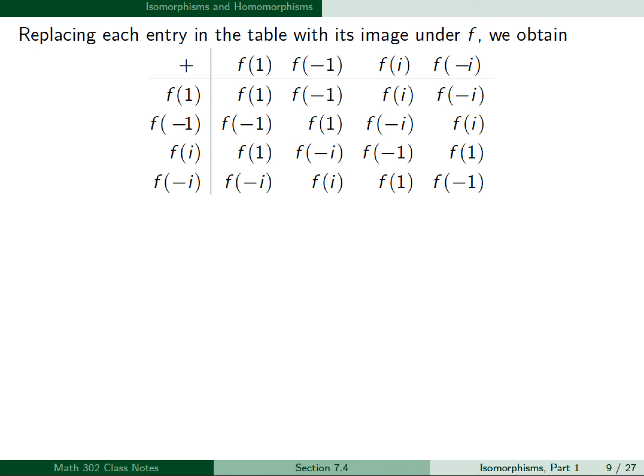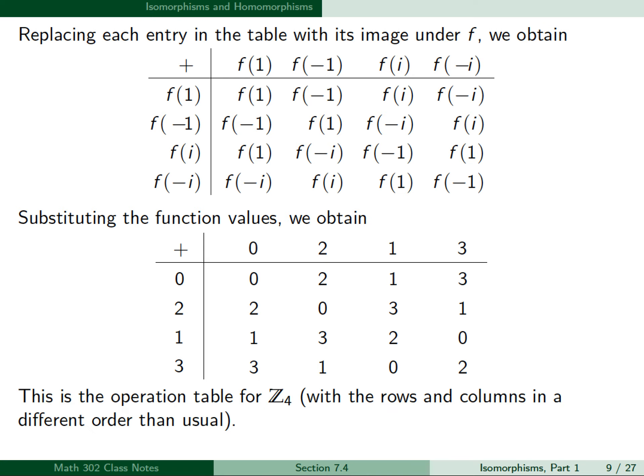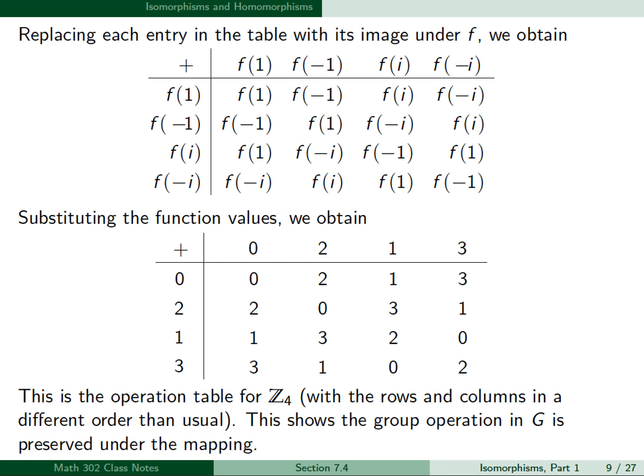Replacing each entry in the table with its image under f, we obtain the following table. Substituting the function values, we obtain the next table. This is the operation table for Z4, with the rows and columns in a different order than usual. This shows that the group operation in G is preserved under the mapping, and therefore f is an isomorphism and G is isomorphic to Z4.